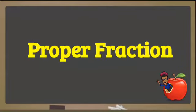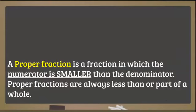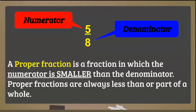Now our first type, proper fraction. A proper fraction is a fraction in which the numerator is smaller than the denominator. Proper fractions are always less than or part of a whole. Here we identify our numerator 5 less than our denominator 8.